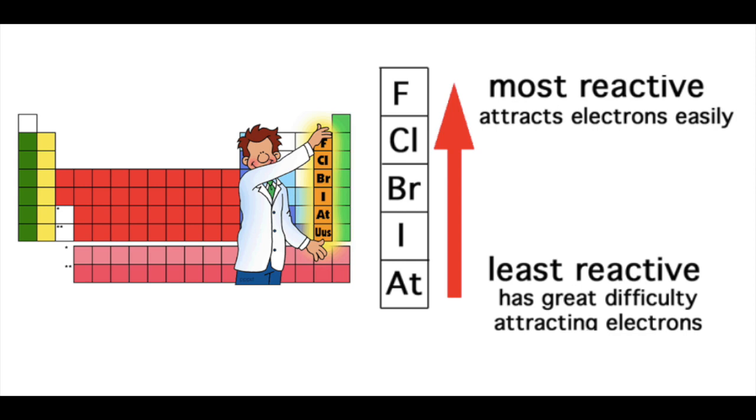Fluorine is also the most reactive and electronegative element in the group, with ununseptium being the least reactive and electronegative element within group 17, as illustrated in the picture on the right.